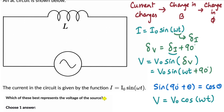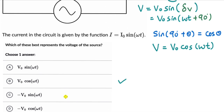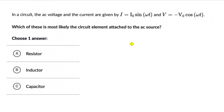Checking the options, the answer is option B. You can try more questions from the exercise in this lesson — if you are watching on YouTube, the exercise link is in the description. Now let's move on to our second question. Here the current is given by I₀sin(ωt) and the voltage is given by −V₀cos(ωt). The question is to figure out the circuit element attached to the AC source. Pause the video and try to figure this out on your own.